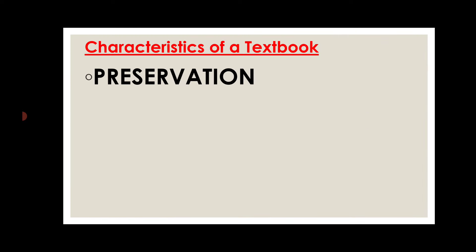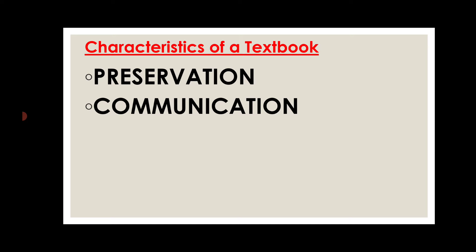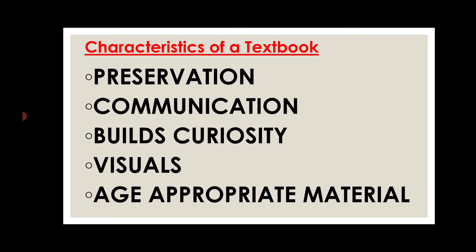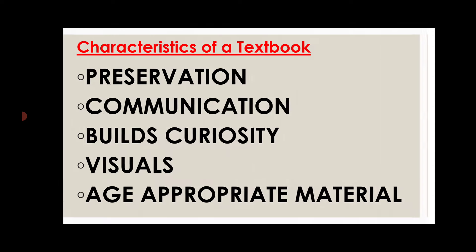Now the characteristics of a textbook. First is preservation — a textbook preserves each and every fact and information related to a particular content or topic. Second is communication — it is a form of communication through which we get to know about a certain subject or topic. Third, it builds curiosity through visuals — it contains pictures which build curiosity in students' minds and help them understand everything in detail. Fourth is age-appropriate material, suited according to different grades and classrooms.